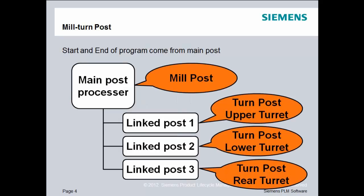For example, in this scenario, the main post processor is a mill post, so it handles all milling functions. But if it requires a turning operation using the upper turret, it passes off control to link post number one. If turning is required with a lower turret, control is passed to link post number two. And finally, if programming is done on the rear spindle using the rear turret, then control is passed to link post number three.